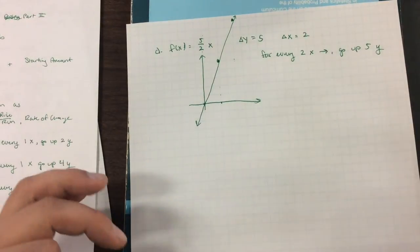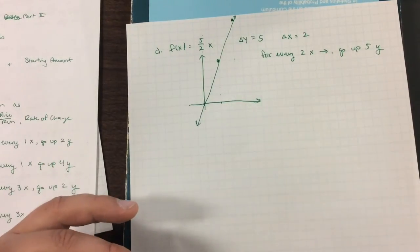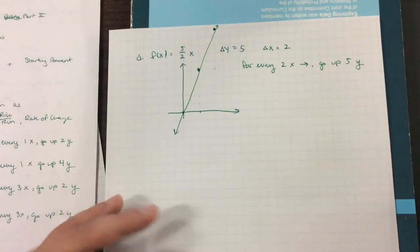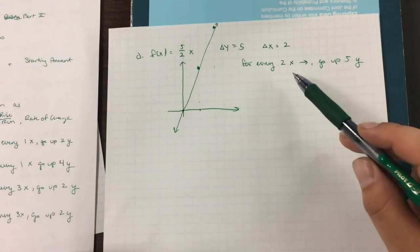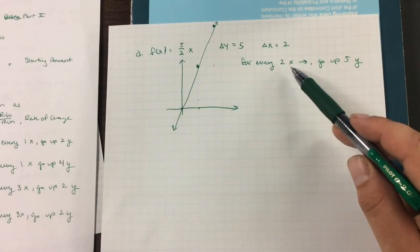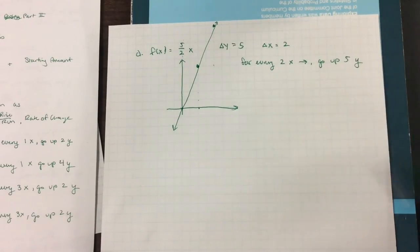This is how we graph rates or slopes. It's always some change of y over change of x. And we're always going to move on our x's first. So we're going to change x followed by changing y going up.